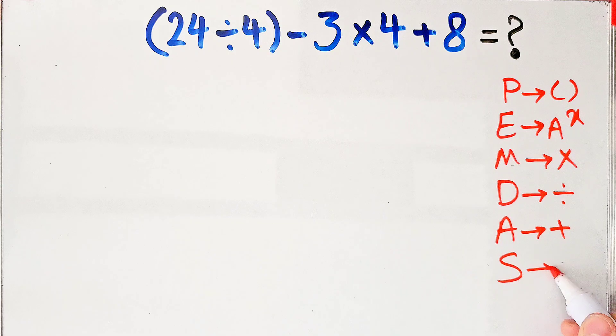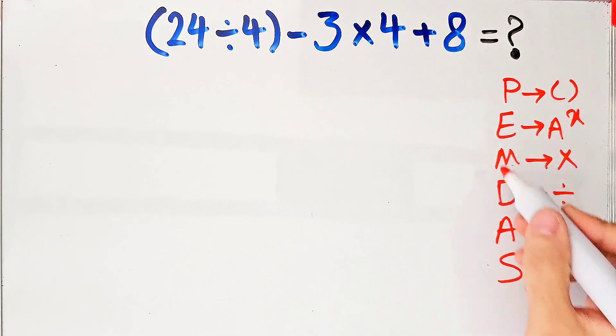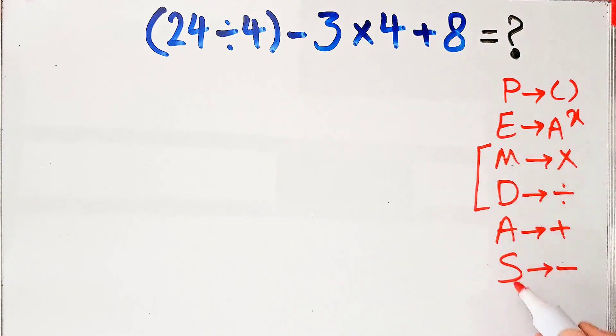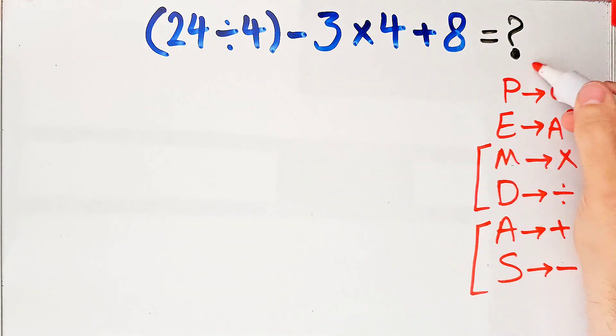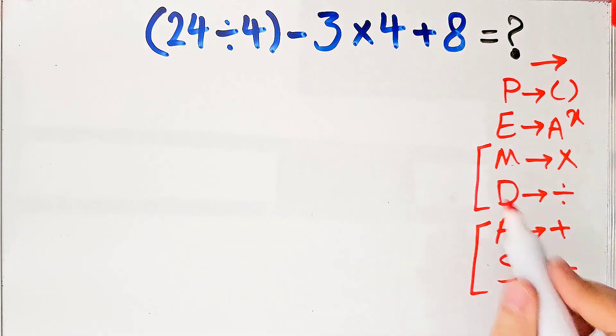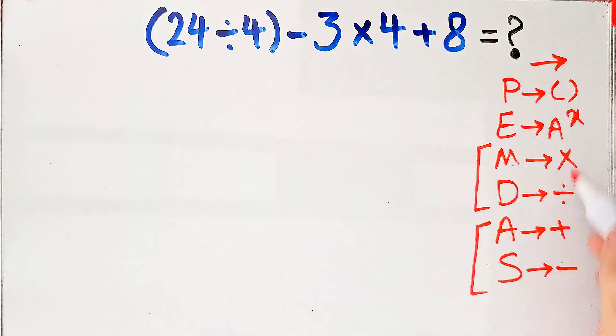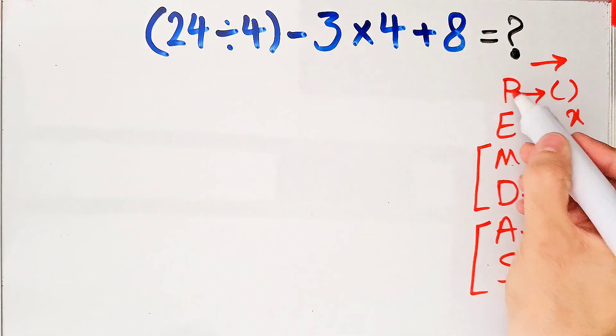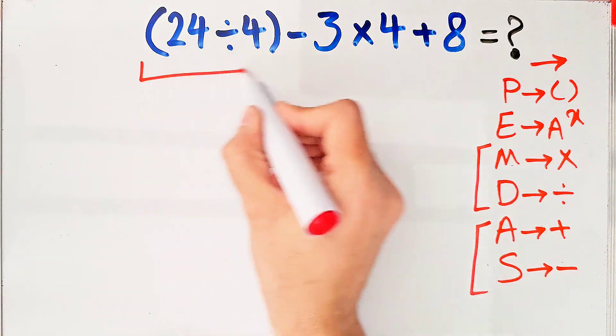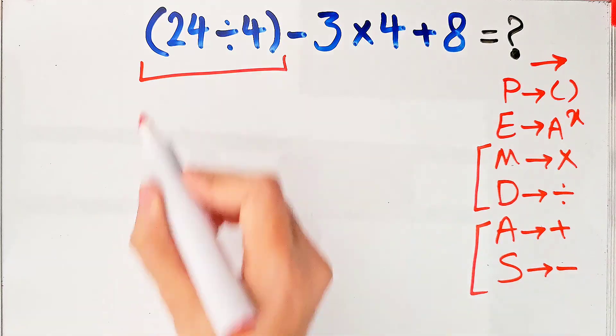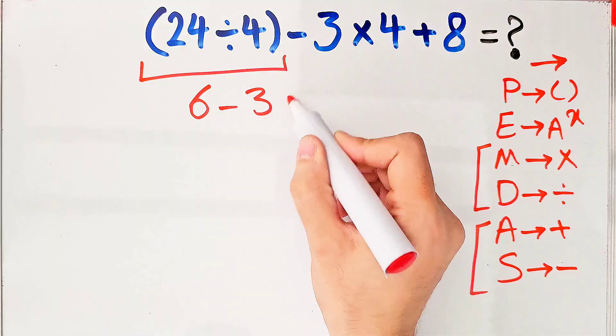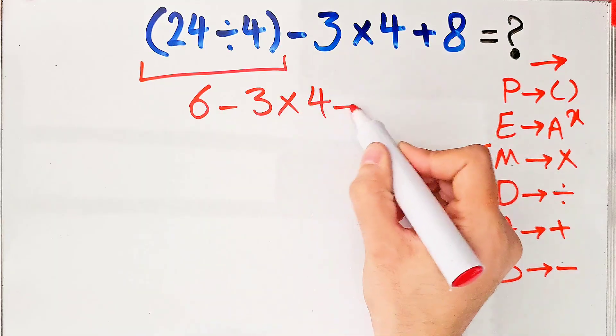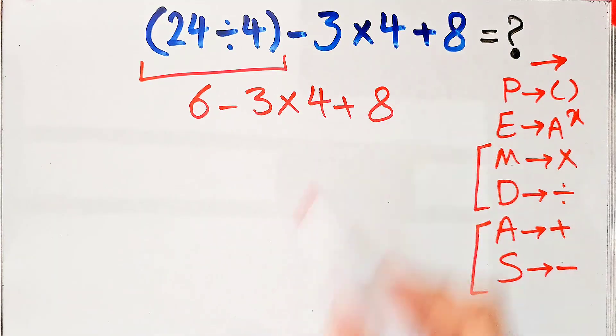In this rule, P stands for parenthesis, E stands for exponent, M stands for multiplication, D stands for division, A stands for addition, and S stands for subtraction. Multiplication and division have the same level of priority. Also, addition and subtraction have the same level of priority, and when we have both in an expression we start from the left. According to the PEMDAS rule, first we simplify the parenthesis: 24 divided by 4 equals 6. Now we have 6 minus 3 times 4, then plus 8.